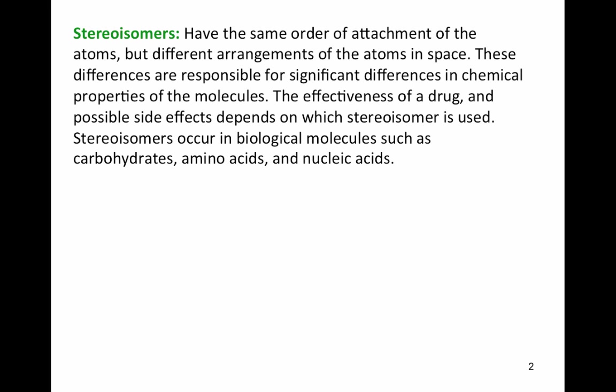The effectiveness of a drug and its possible side effects depend on which stereoisomer is used. In nature, the left-handed molecule is typically the most common and the most effective drug. If a drug doesn't work for someone, there's a possibility it's the wrong handedness for their body. Stereoisomers occur in biological molecules such as carbohydrates, amino acids, and nucleic acids.